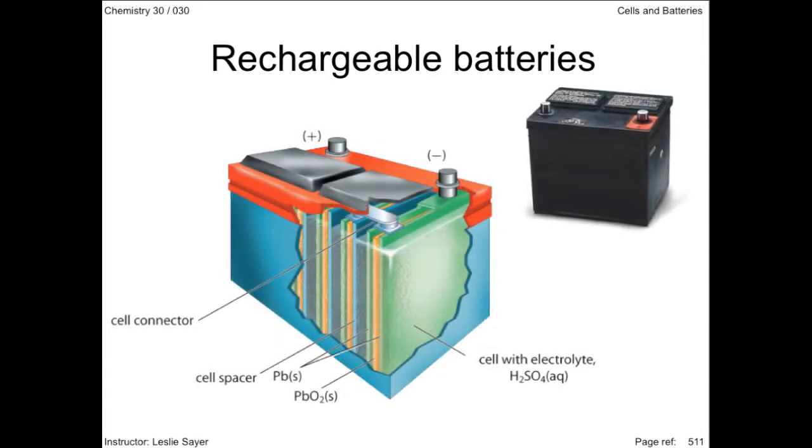The most common rechargeable battery is the car battery. Most cars are fitted with a lead acid battery. When you start your car, the battery discharges as a voltaic cell. However, the engine movements provide energy to drive the alternator, which serves to recharge the battery. All secondary batteries operate as both voltaic and electrolytic cells.